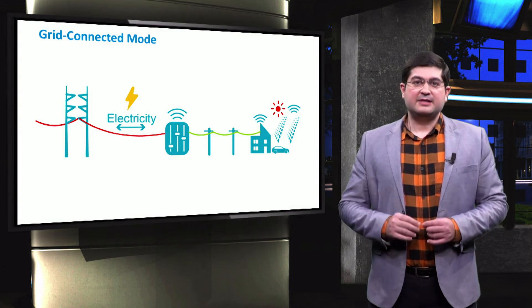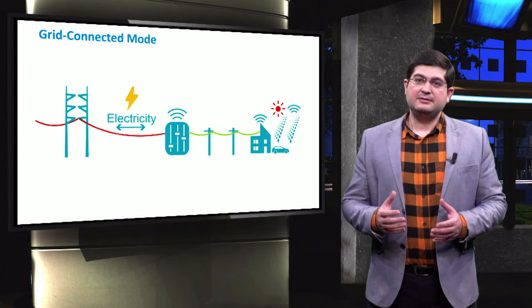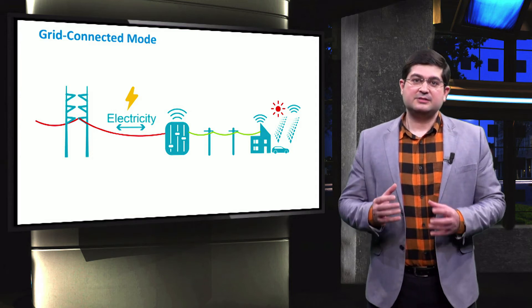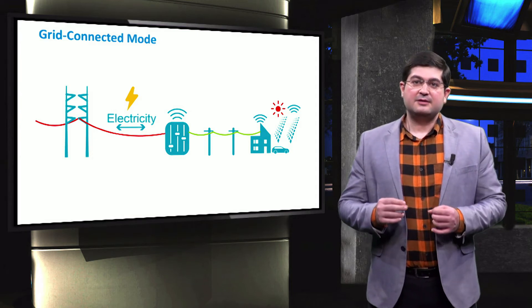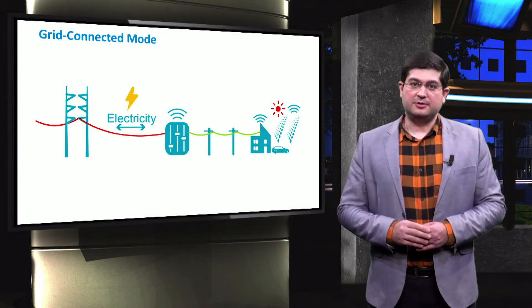In general, the external grid can be either strong or weak. In this course, we call a grid strong when it dominantly and solidly controls both voltage and frequency at the connection point.